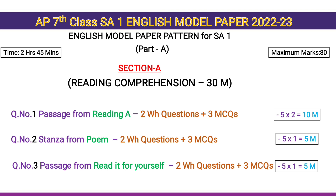English Model Paper Pattern for SA1 is 80 marks. Section A — Reading Comprehension, 30 marks. Question No. 1 is a passage from Reading — 5 questions, 5 × 2 = 10 marks.